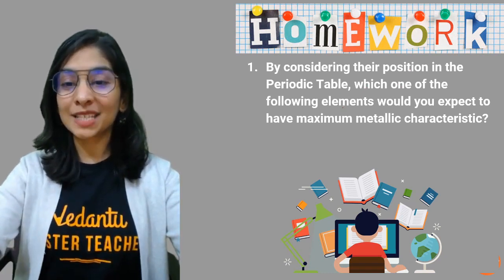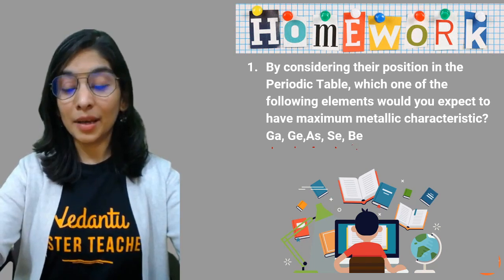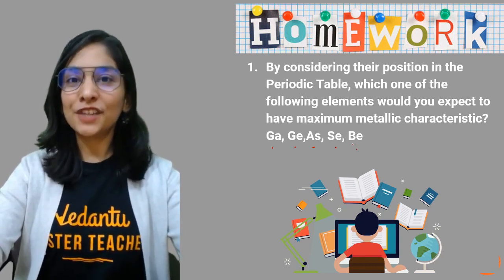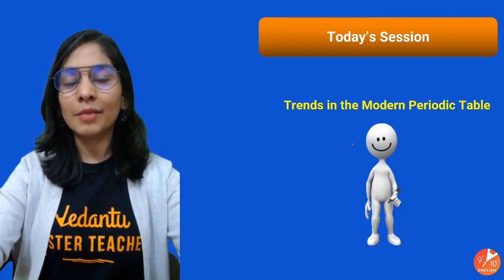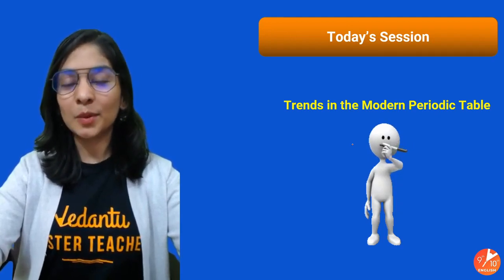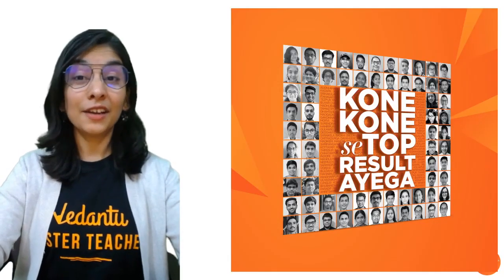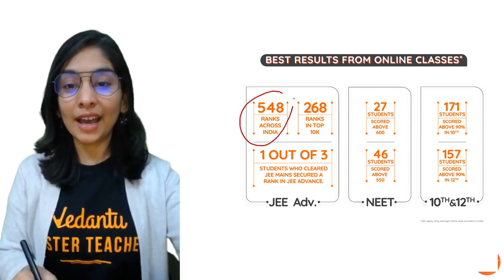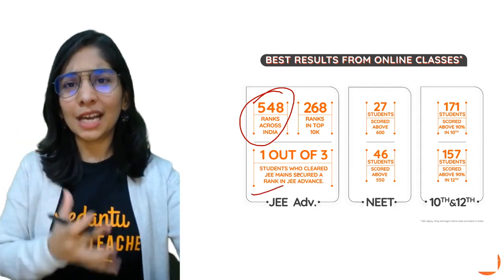Homework question: By considering their position in the periodic table, which of the following elements would you expect to have maximum metallic character? Gallium, Germanium, Arsenic, Selenium, or Barium. Pause the video and solve it — drop your answer in the comments. Sprint series practice sessions are coming, and the next session will be a doubt-clearing mentee session for this chapter.